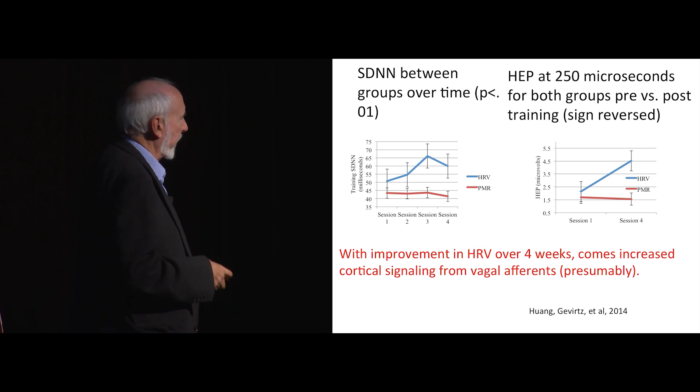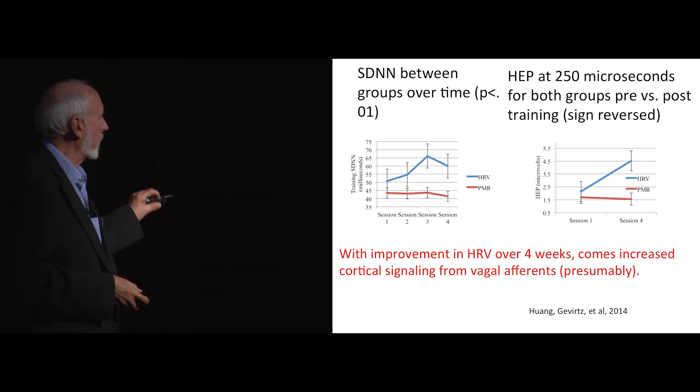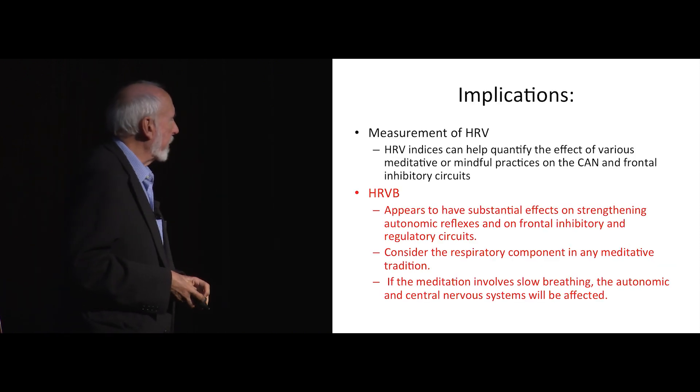Then we look at that N250 and you can see this group had a big boost in N250. And we're now looking to see whether that corresponds to reductions in depression and anxiety in clinical populations. So the implications for that, for this group, I think, appears that there's a substantial effect of strengthening autonomic reflexes and frontal inhibitory regulatory circuits from this kind of biofeedback.